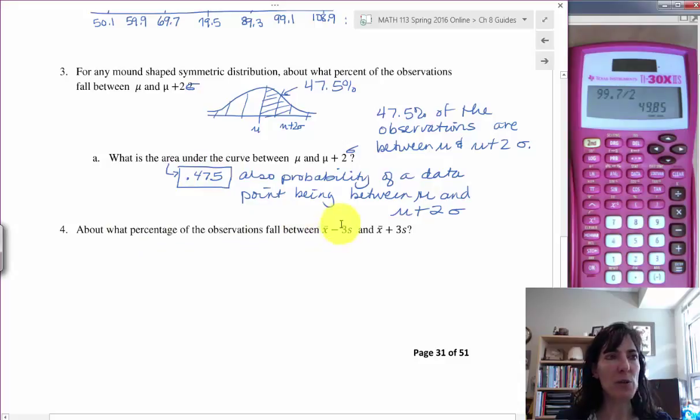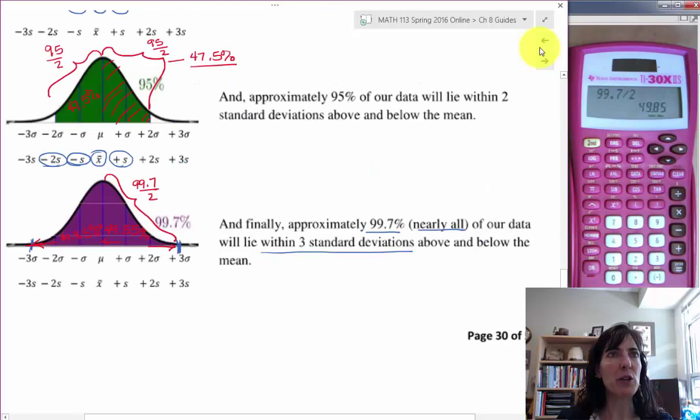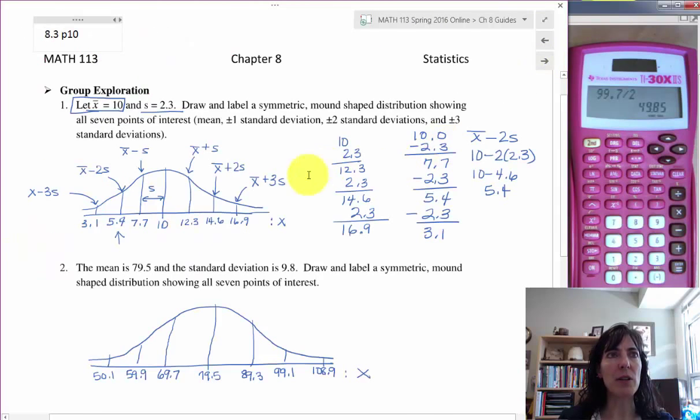About what percentage of the observations fall between x-bar minus 3s and x-bar plus 3s? That's going to be a little bit easier. Let's go back to our picture. And here we had between x-bar minus 3s, that's right here, and x-bar plus 3s, that's here. And so it's this entire region, which was 99.7.